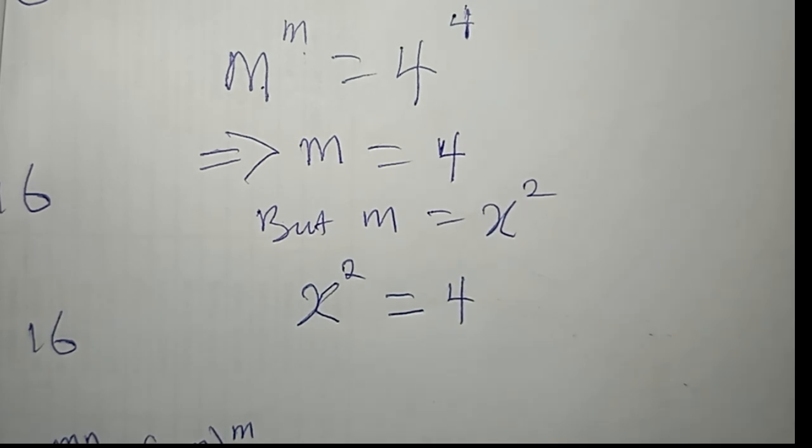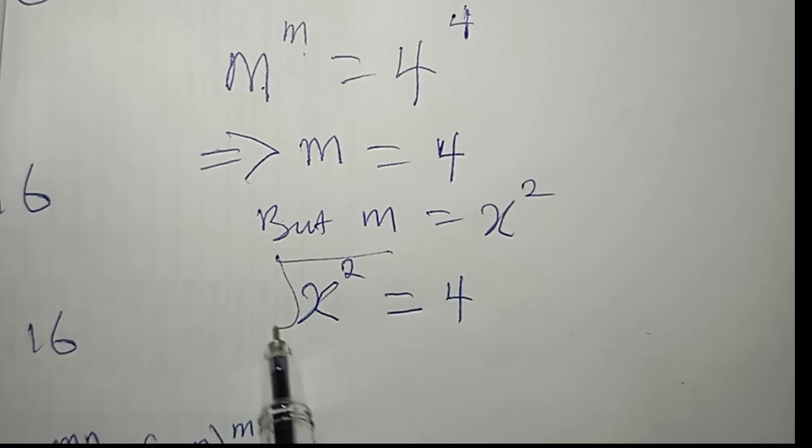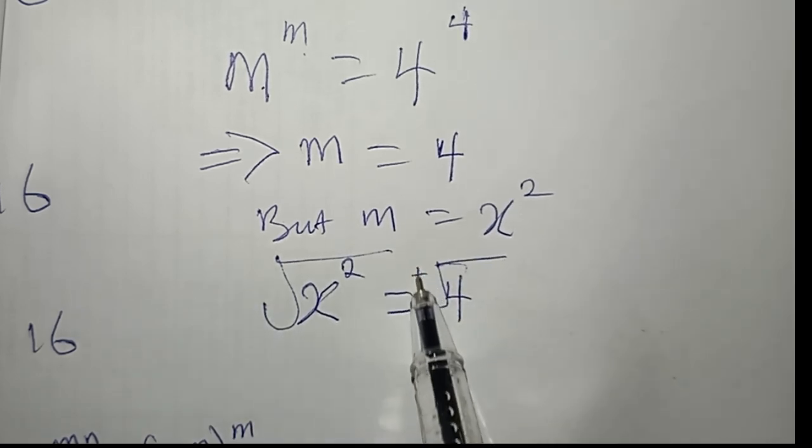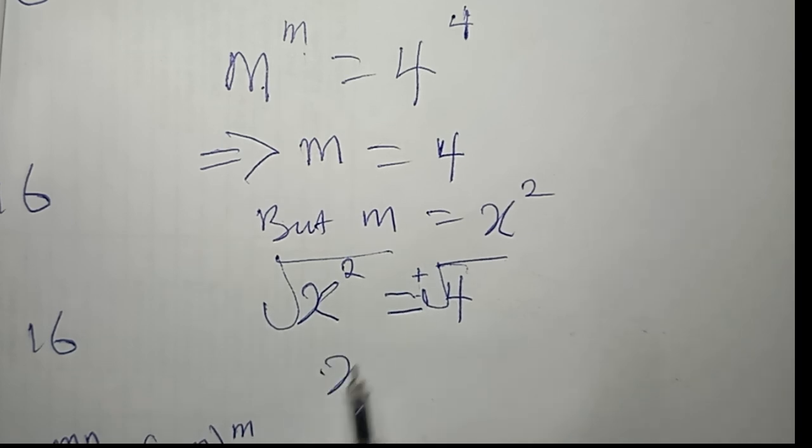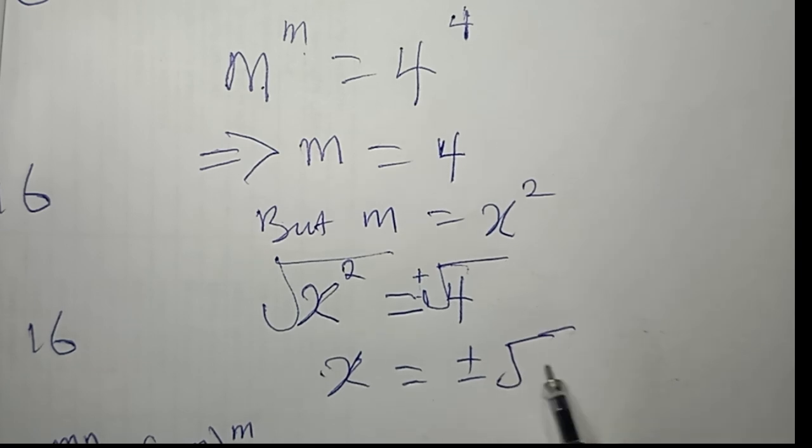So you can go ahead and take the square root of both sides. Of course, this is plus or minus. So x equals plus or minus the square root of 4.